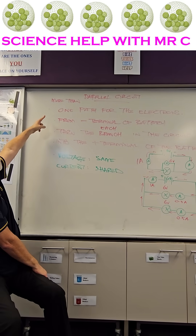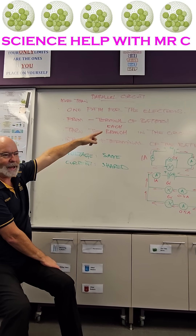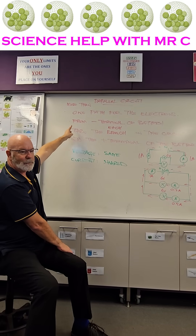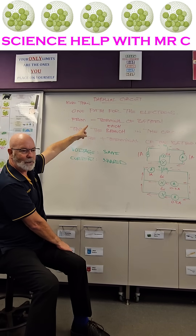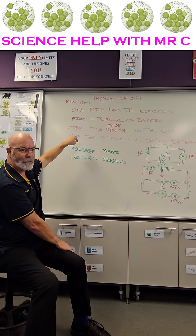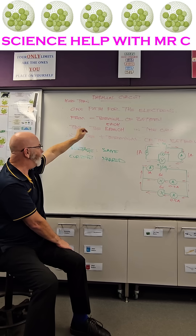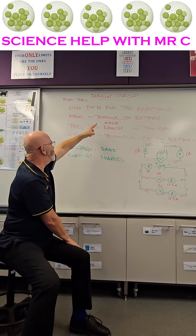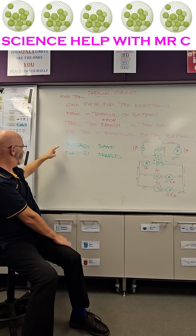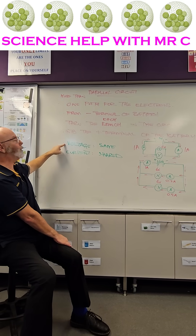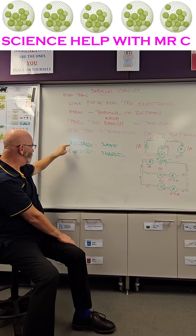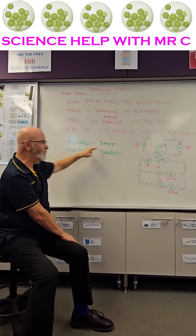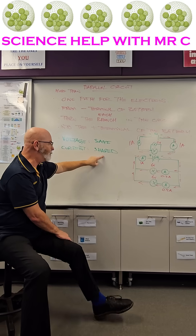In parallel circuits there is more than one path for the electrons. The electrons still go from the negative terminal to the positive terminal, and through the circuit they have to go through each branch. The rule for parallel circuits is the voltage stays the same in each branch but the current is shared.